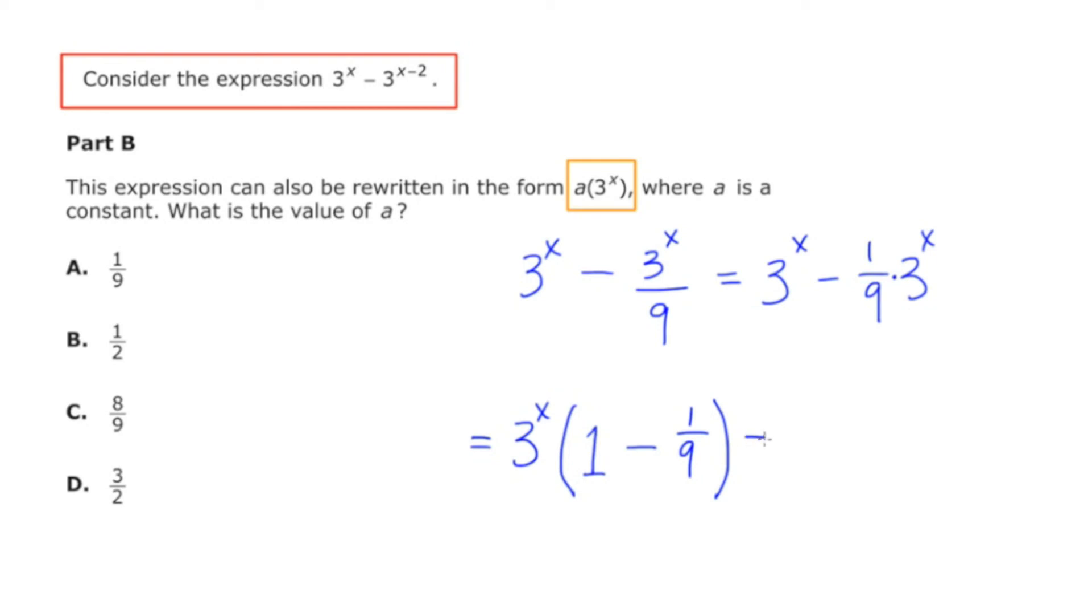Now 1 minus 1 9th is really 9 9ths minus 1 9th or 8 9ths. So we have 3 to the x times 8 9ths. Now multiplication is commutative, so the order doesn't matter. So I'm going to write this as 8 9ths of 3 to the x, or 8 9ths times 3 to the x.